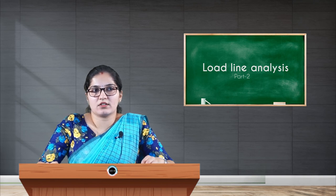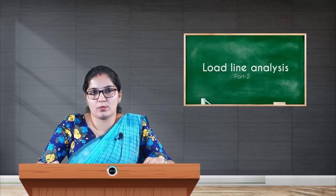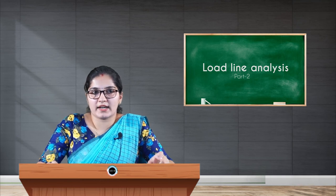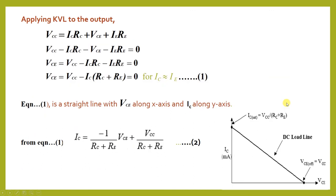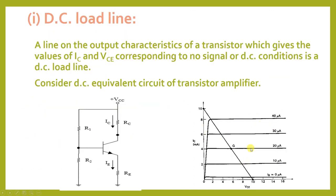The intersection of the AC load line and DC load line represents the Q point. After drawing the characteristic curve, we calculate the DC load line values and then locate the AC load line values. The point where both the AC and DC lines coincide with the characteristic curve is named the Q point.